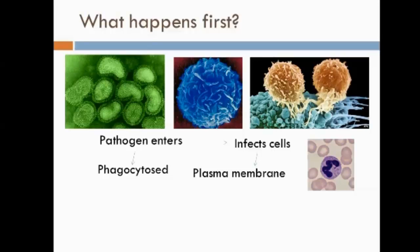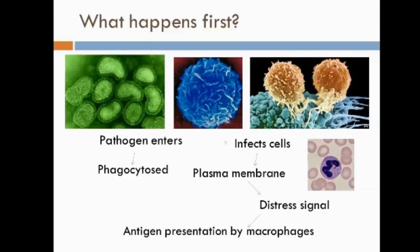When a pathogen enters a body cell, it is fought off by lysosomes. This can damage the pathogen, resulting in fragments attaching to the body cell's membrane. These cell membrane fragments act as a distress signal, calling for backup from other immune cells. They also indicate that the cell is infected and must therefore be destroyed by the T killer cells.